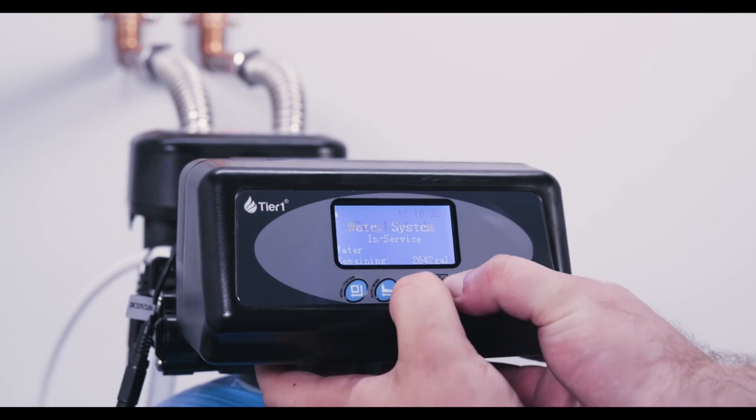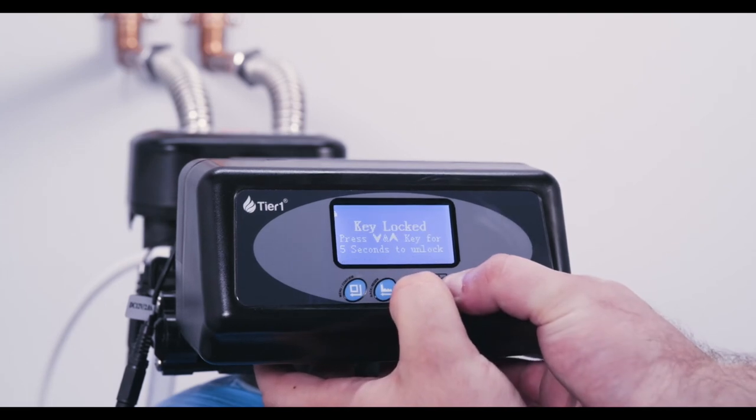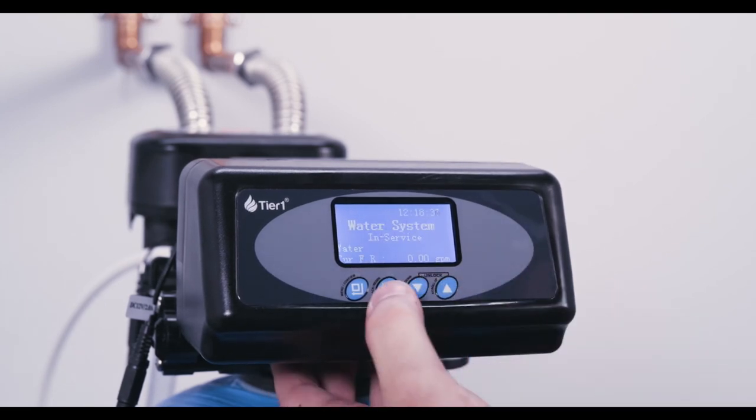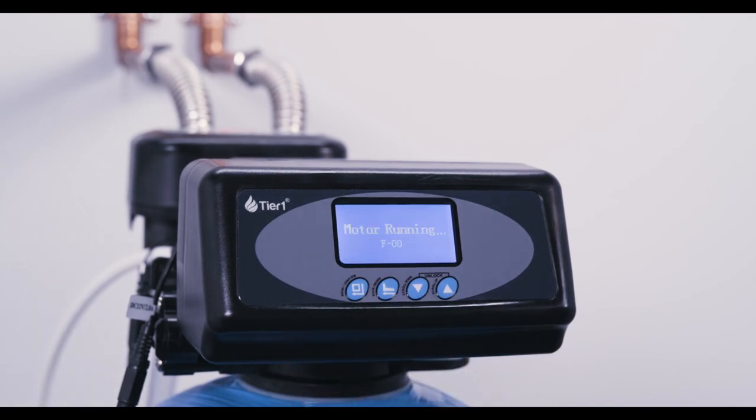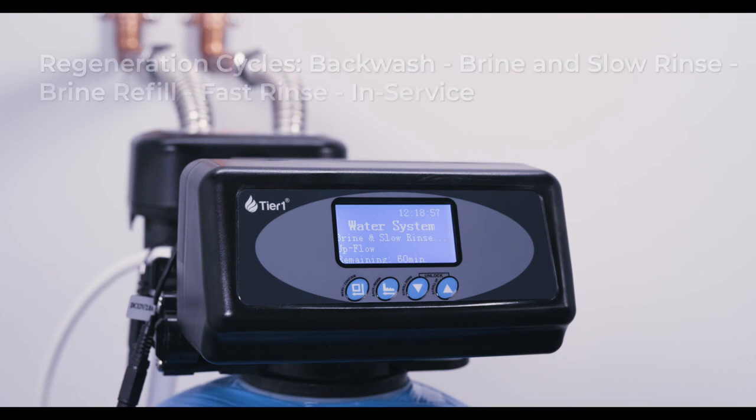Press and hold both the up and down keys simultaneously for a few seconds to unlock the keypad. Press the regen key to advance through each cycle. When you press the regen key, the screen will display motor running as it positions the ceramic disc. Once motor running disappears and the next phase is displayed, press the manual return key to advance to the next phase.